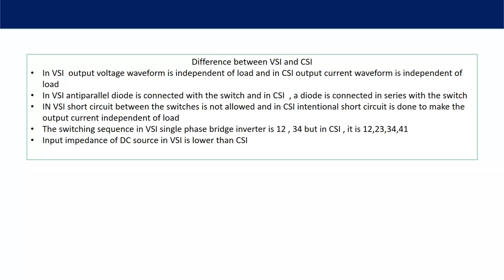Let's discuss the difference between voltage source and current source inverter. In a voltage source inverter, the output voltage waveform is independent of load. Whatever type of load you connect across the inverter, its output voltage waveform will remain the same, but its current will change. But in a current source inverter, the output current waveform remains the same for any kind of load, but its voltage will change.